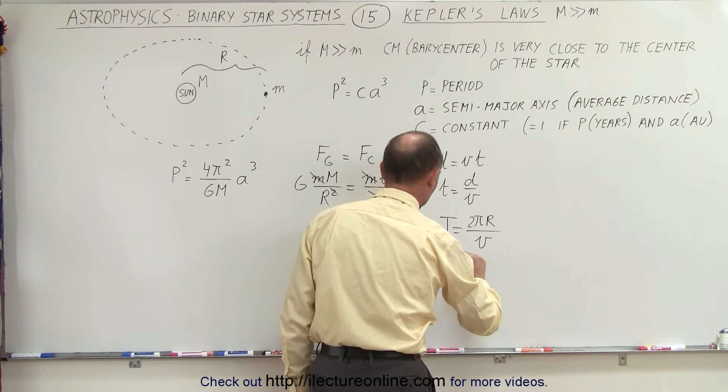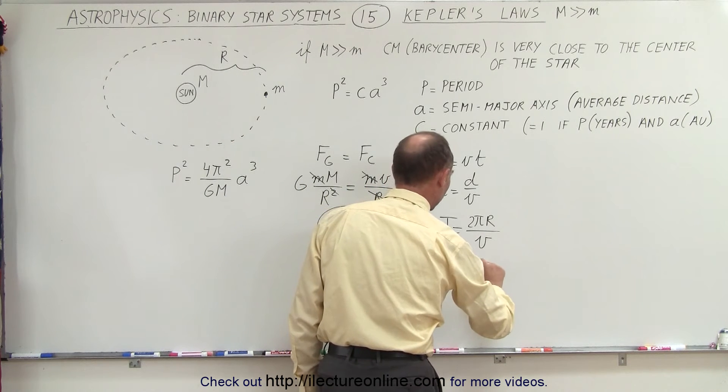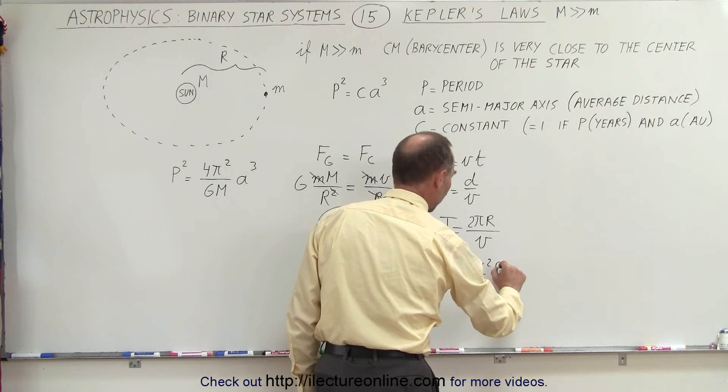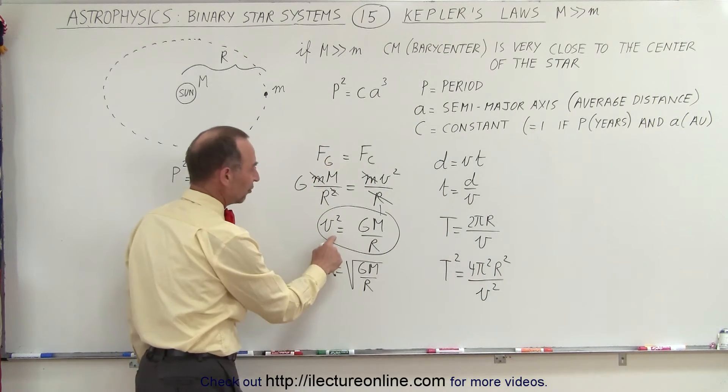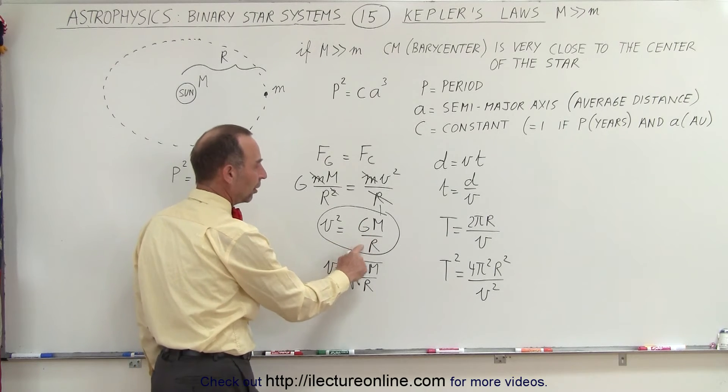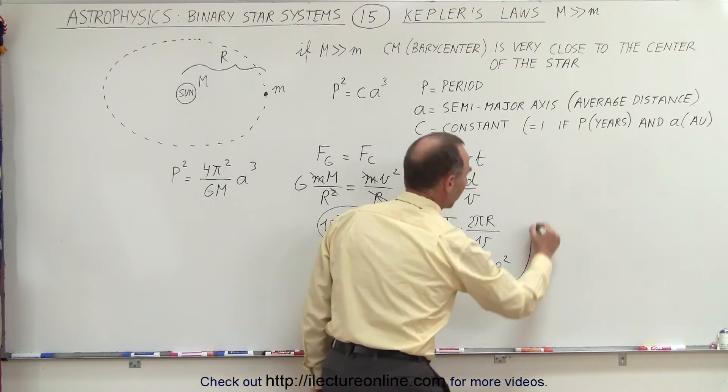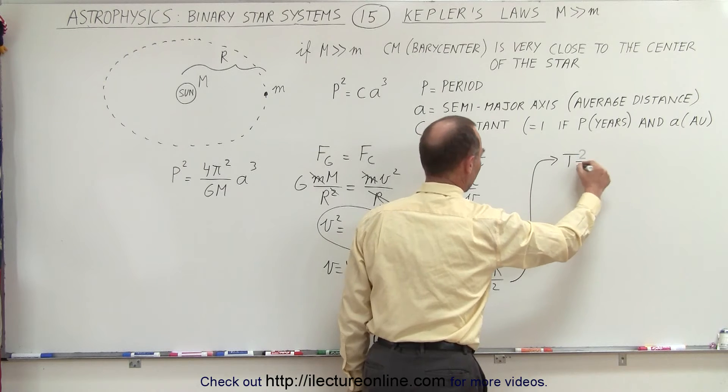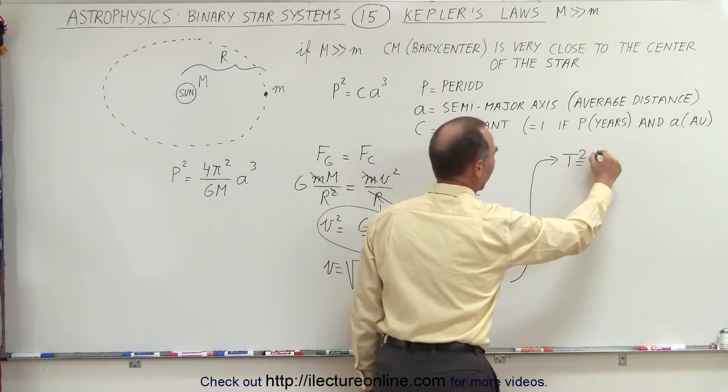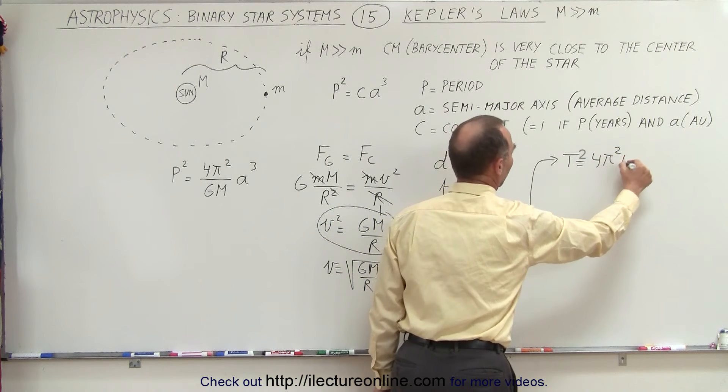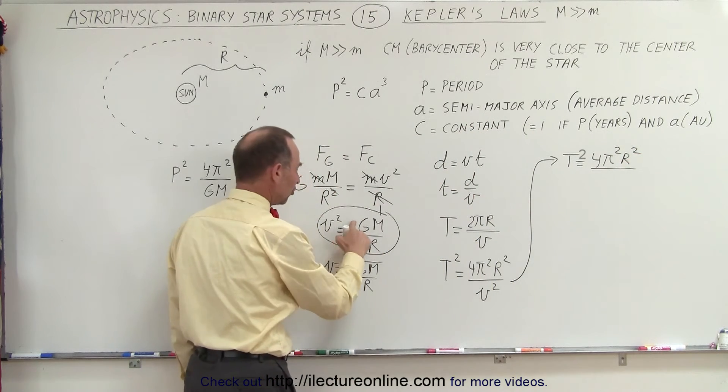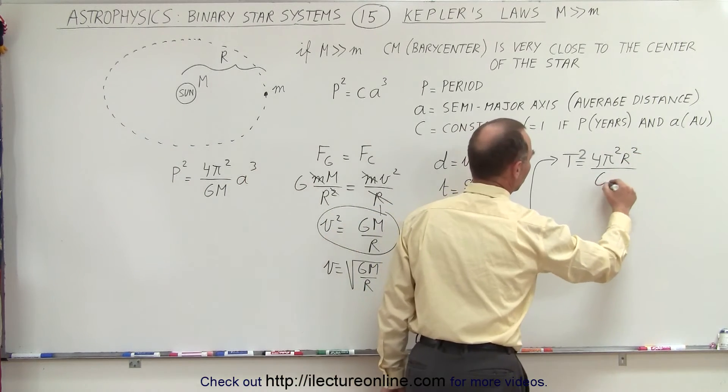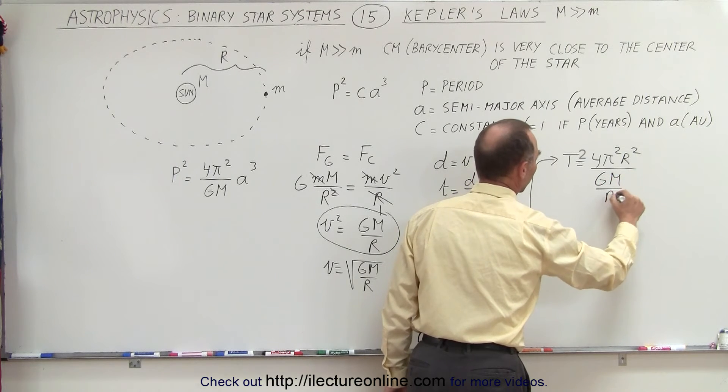We square both sides. We get the period squared is equal to 4π²r² divided by v². And since v² is equal to GM/r, we can plug that in here. We can say that the period squared is equal to 4π²r² divided by, instead of v², we're going to write GM/r.